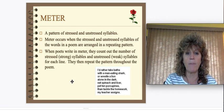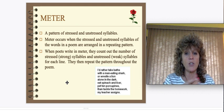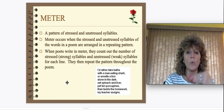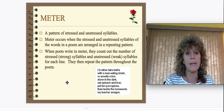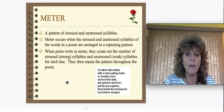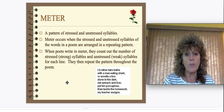Meter is a pattern of stressed and unstressed syllables. Meter occurs when the stressed and unstressed syllables of the words in a poem are arranged in a repeating pattern. In other words, meter is like the timing — the author organizes the words so that the timing is the same in every line and it has a certain measured beat. When poets write in meter, they count out the stressed (strong) syllables and unstressed (weak) syllables for each line, then repeat the pattern throughout the poem.